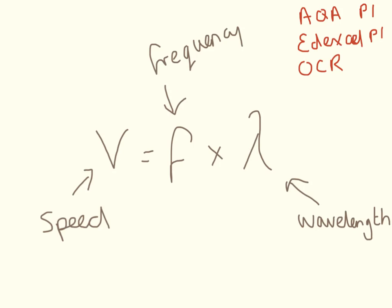So this is speed, frequency and wavelength. Speed is measured in meters per second. Wavelength is measured in meters. And frequency is measured in hertz. I'd just like to draw your attention to my use of capital and lowercase letters. This is important when you're writing down units.